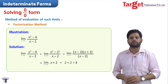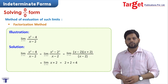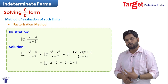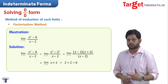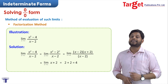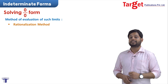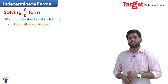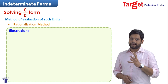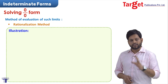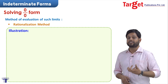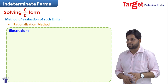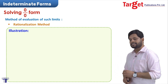The factorization method means: whenever we use it, we take the factors of the numerator or denominator, cancel common parts, and then substitute the limit. This eliminates the 0/0 form. So this is the first type of approach we use when we have a 0/0 form. Now the second type of thing we can do is the rationalization method.